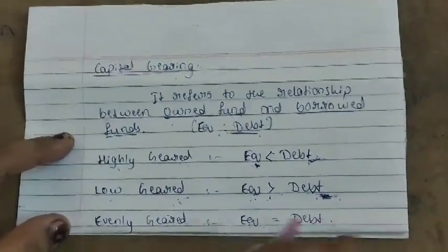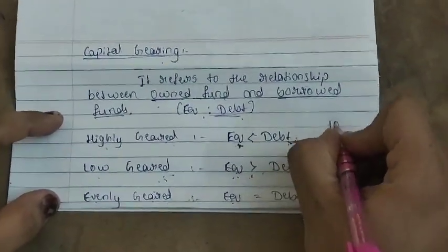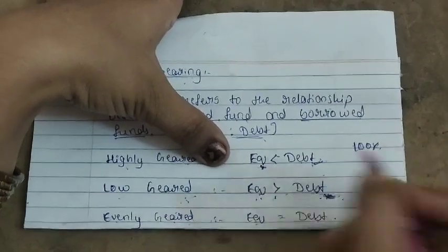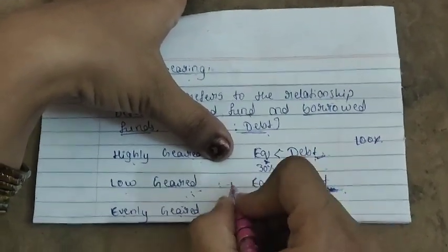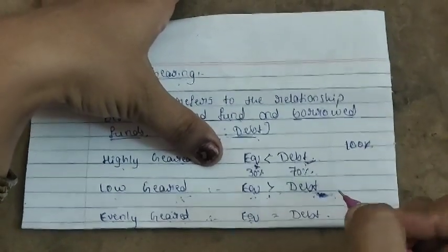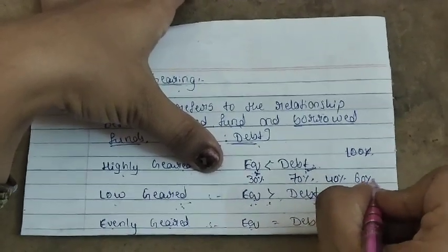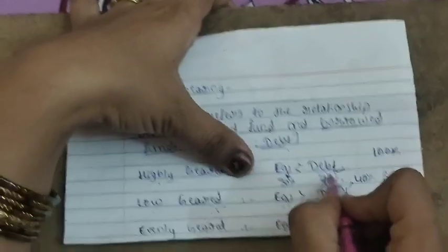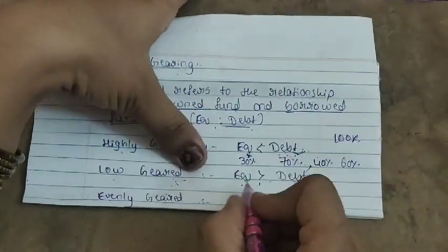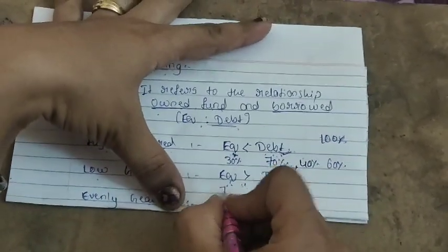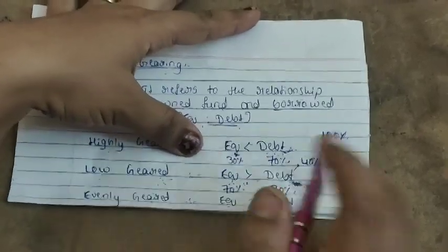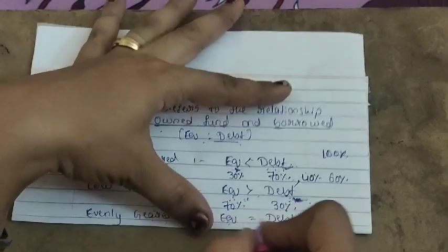Evenly geared means equal combination of both equity and debt. For example, if total capital structure is 100%, in highly geared the equity may be 30% and debt 70%. It may also go for a 40-60 pattern. In low geared, equity is 70% and debt is 30%, or even 60-40.